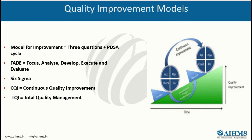Next we will discuss the quality improvement models. The model for improvement has three questions and a PDSA cycle. The three questions are: the aim — what are we trying to accomplish? The measures — how will we know a change is an improvement? And the change — what change can we make that will result in improvement? The PDSA cycle means: P for Plan a change, D for Do the change, S for Study the result, and A for Act on the results. The PDSA cycle enables rapid testing and learning.